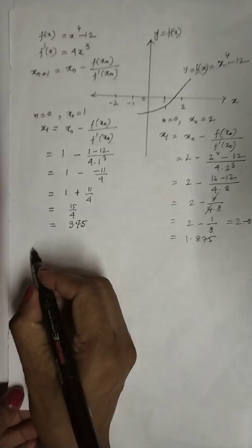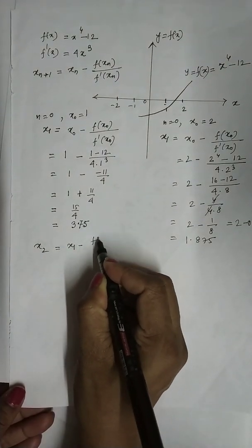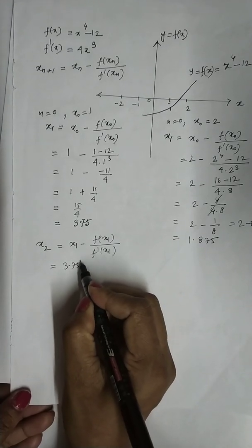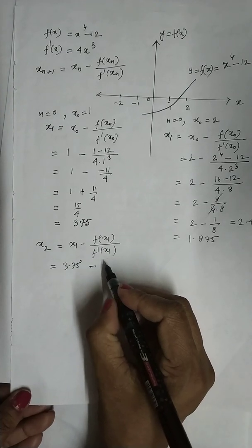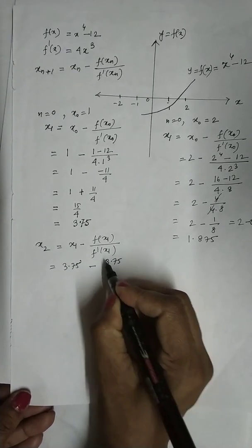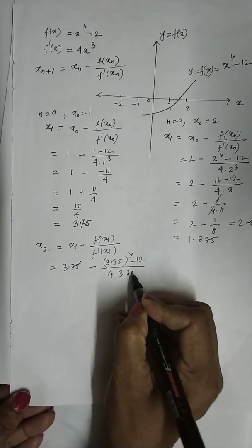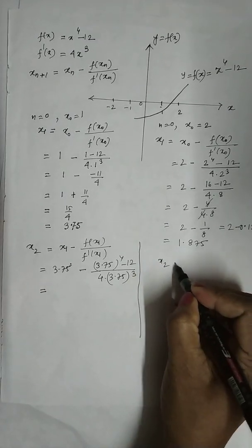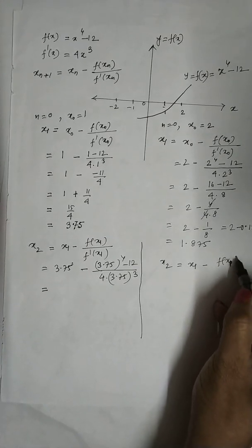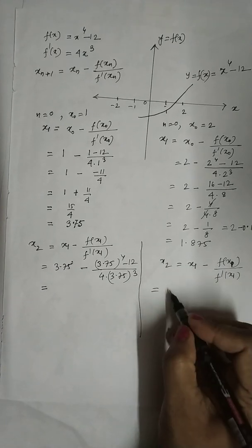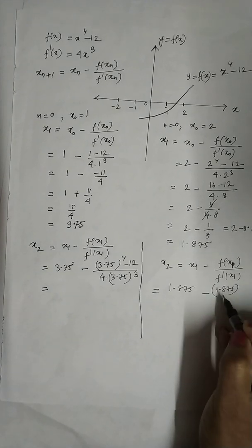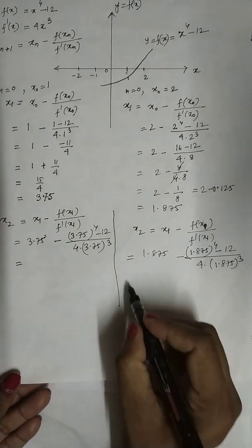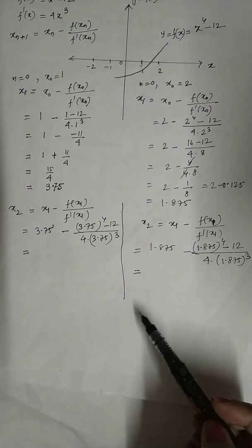Similarly, you can find x_2, that is x_1 minus f(x_1) divided by f'(x_1). So x_1 is now 3.75 minus (3.75⁴ - 12) divided by (4 × 3.75³). You will get some value of x_2. Similarly, if you put here, then you will get x_1 as 1.875 minus (1.875⁴ - 12) divided by (4 × 1.875³). So you will have some value of x_2. Then you can find x_3 in both cases.